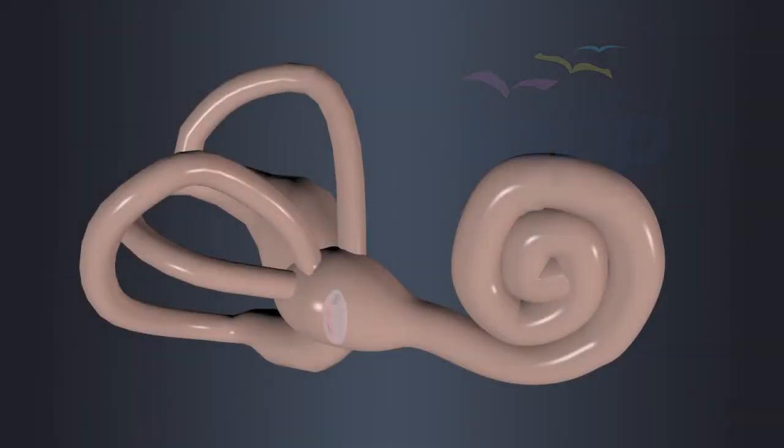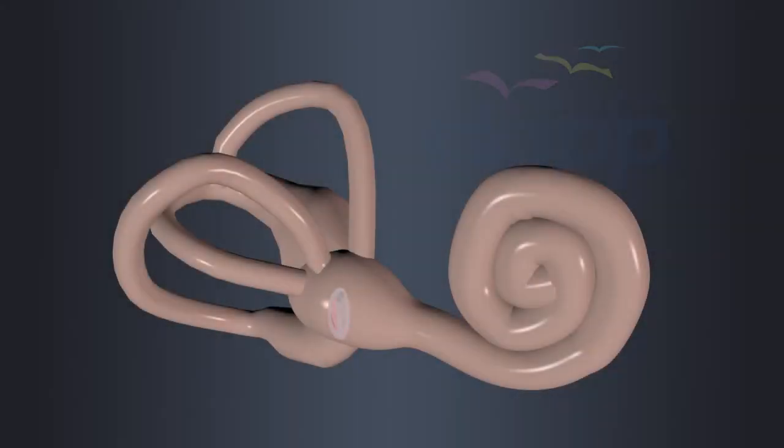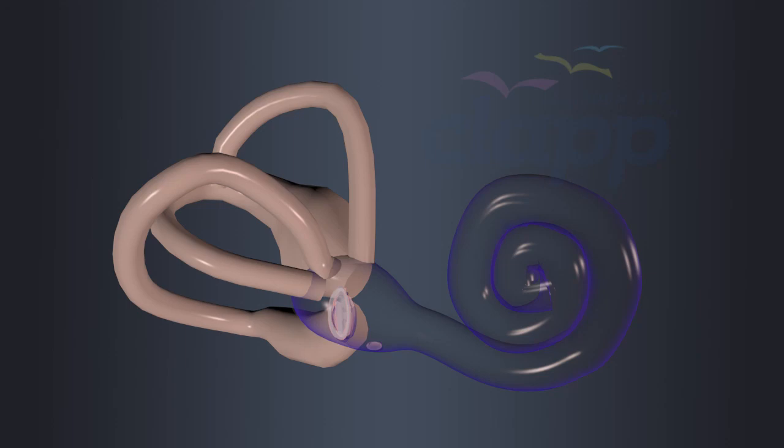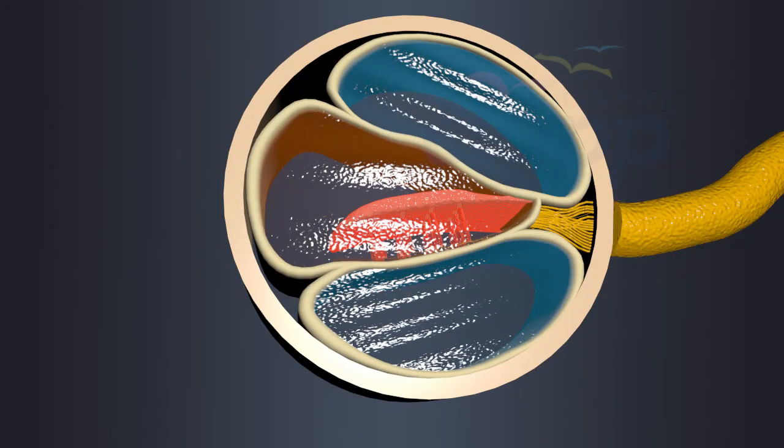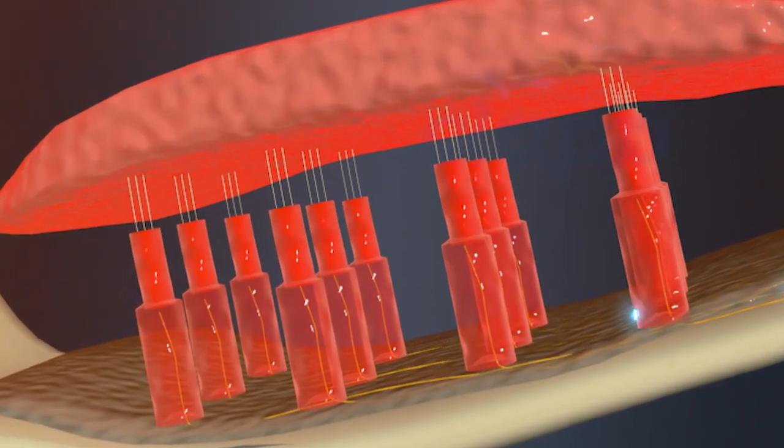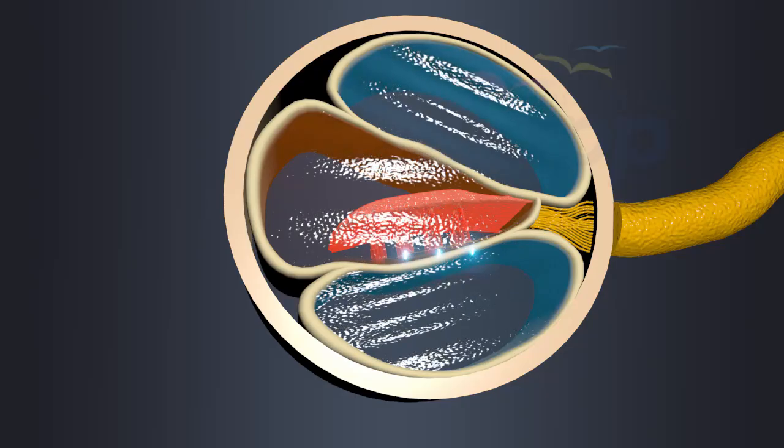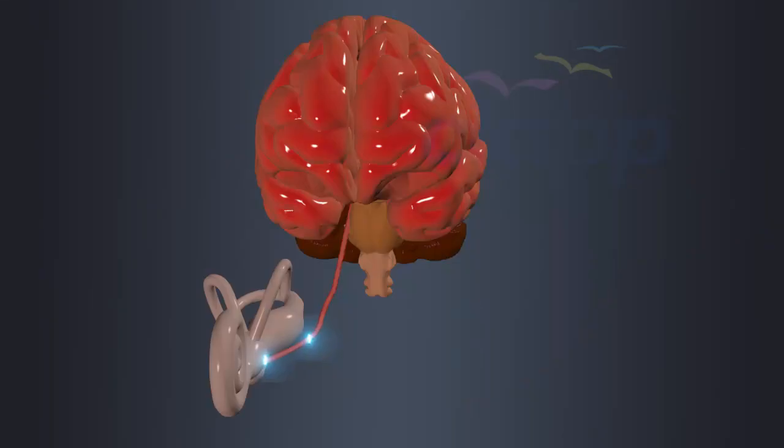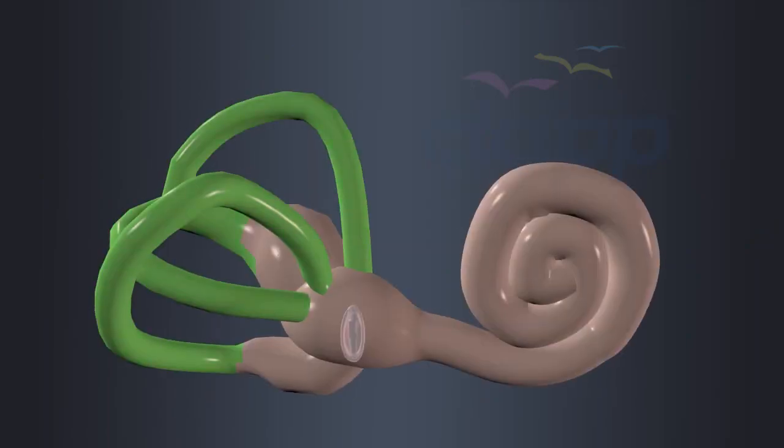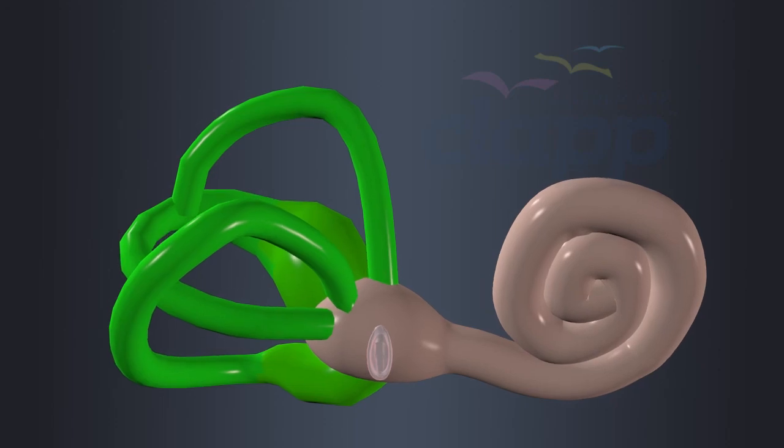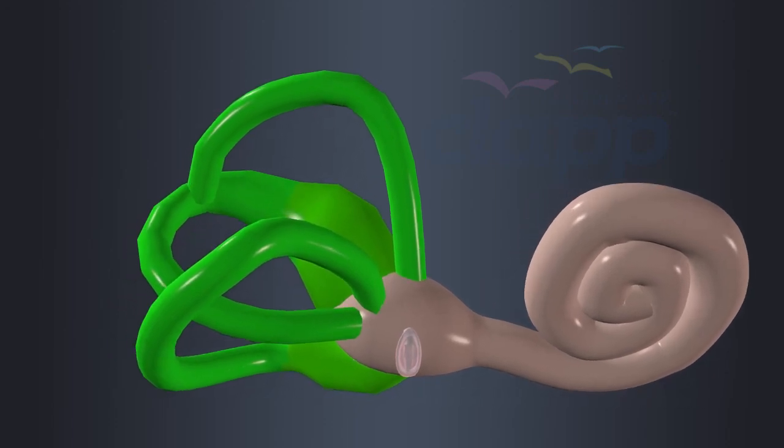Inner ear. The inner ear is comprised of cochlea, three semicircular canals, and vestibule. Cochlea is a spiral shaped structure filled with fluid and hair cells. These hair cells in the cochlea convert the amplified vibrations into electrical signals that the auditory nerve carries to the brain for interpretation. Semicircular canals and vestibule help in maintaining body balance.